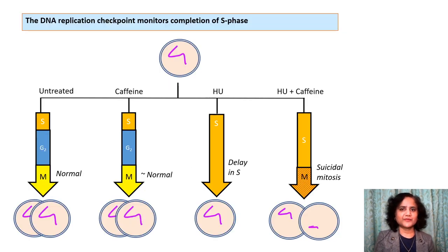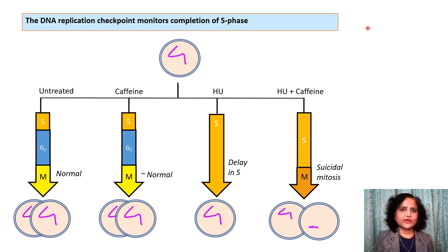The DNA replication checkpoint, sometimes called the replication stress checkpoint, monitors completion of S phase and checks whether DNA replication is complete. Hydroxyurea (HU) is a chemical that causes depletion of deoxyribonucleotide triphosphates (dNTPs), the precursors for DNA synthesis. HU inhibits ribonucleotide reductase, which is important for dNTP formation. Adding HU means insufficient substrates are available, causing slowdown or stalling of replication forks, and sometimes fork collapse if prolonged.